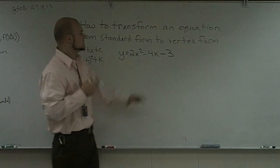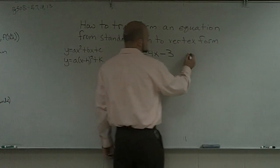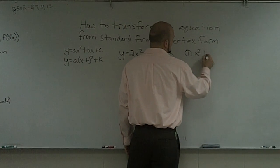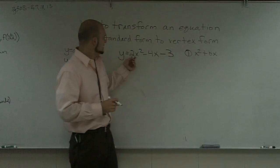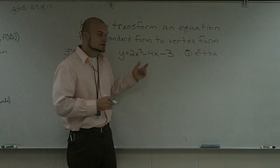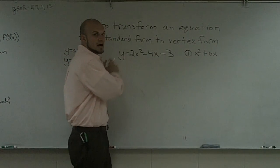So the first thing we do when we're completing the square is we need to have it in x squared plus bx form. And what I mean by that is we cannot have a coefficient to our x squared. So what I'm going to do is I'm going to factor out that 2.